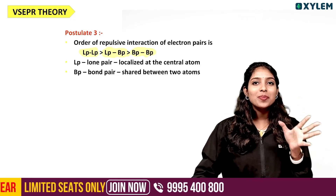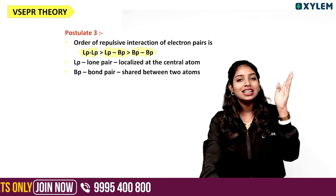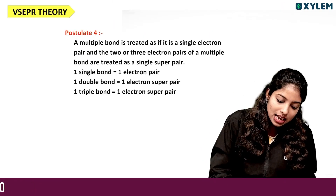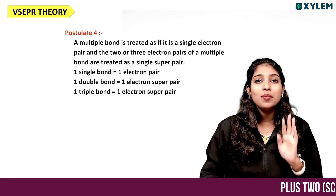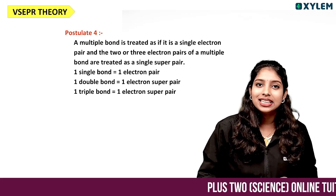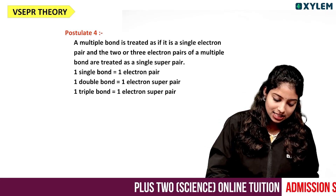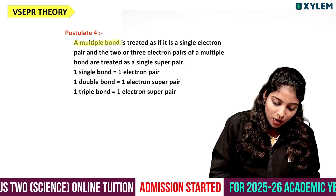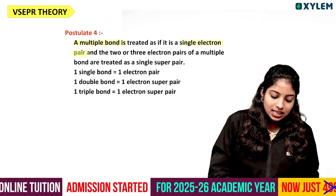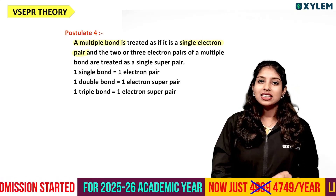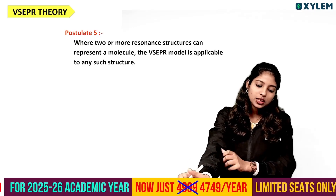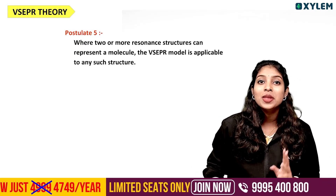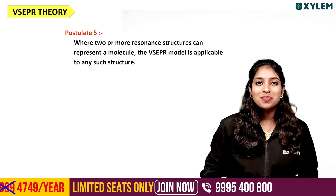So lone pair–lone pair repulsion is the strongest, followed by LP–BP and then BP–BP. The 4th postulate states that multiple bonds are treated as a single bond in VSEPR — a multiple bond is treated as a single electron pair. The next postulate is that VSEPR theory is applicable to resonance structures.